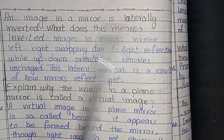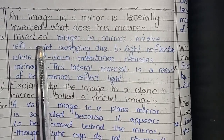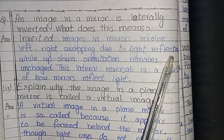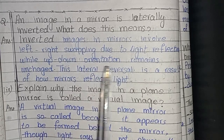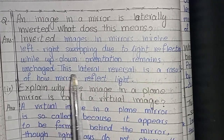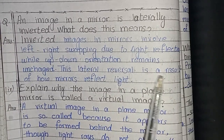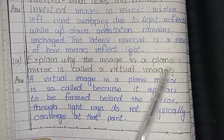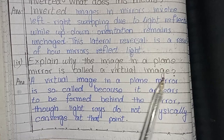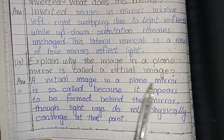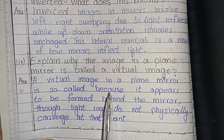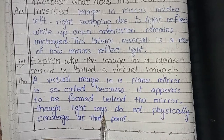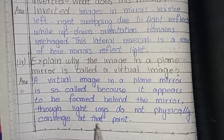An image in a mirror is literally inverted. What does this mean? Inverted images in mirrors involve left-right swapping due to light reflection, while up-down orientation remains unchanged. This literal reversal is a result of how mirrors reflect light. Explain why the image in a plane mirror is called a virtual image. A virtual image in a plane mirror is so called because it appears to be formed behind the mirror, though light rays do not physically converge at that point.